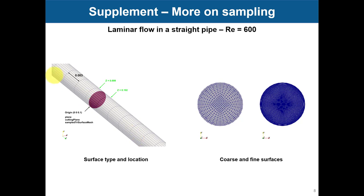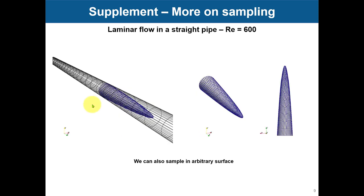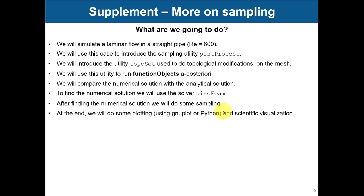So besides the mesh — you can see the mesh going from here to here — you can create a random surface, put it there, and sample anything there. But it doesn't necessarily need to be a straight planar surface like this one. You can also have crazy surfaces like this and do sampling there, computing whatever you want on that surface.